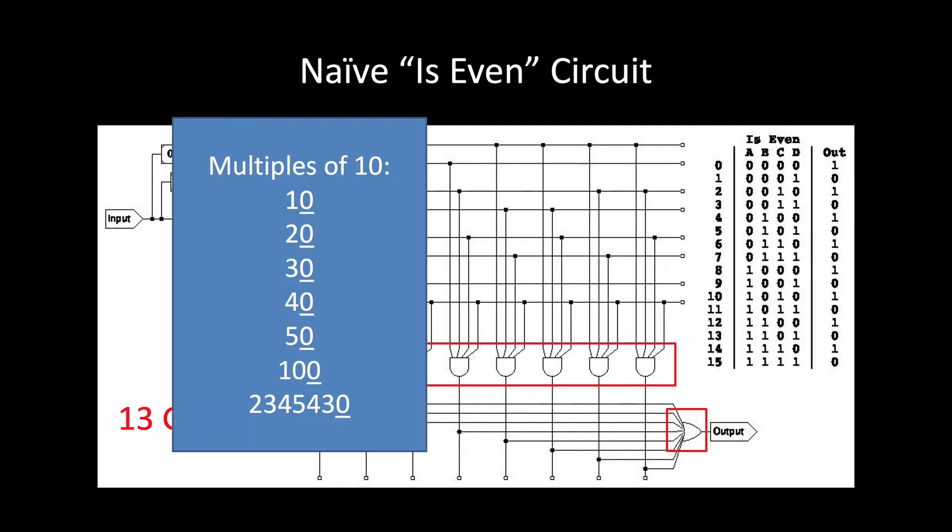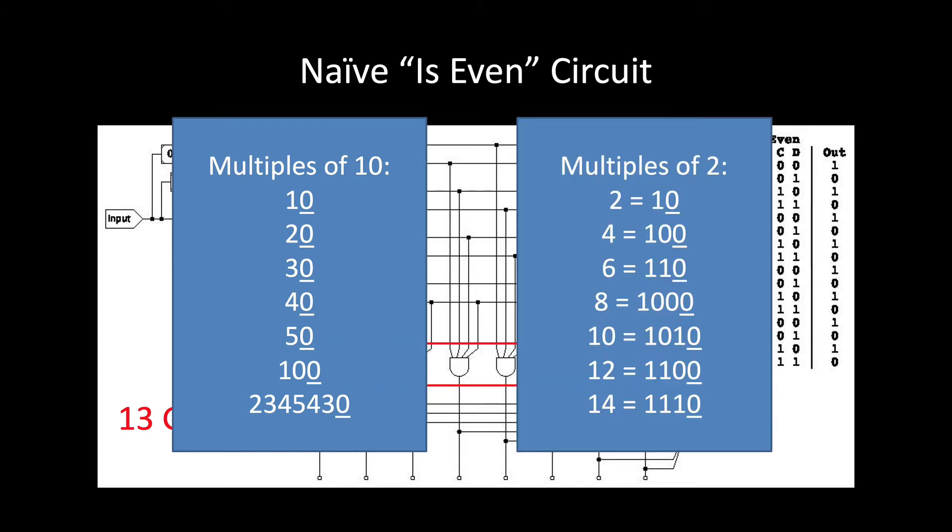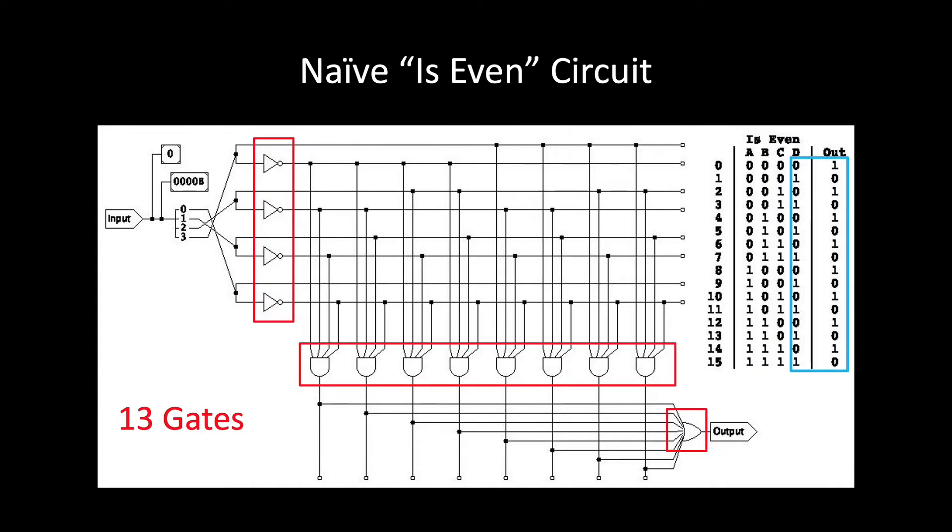Well, in decimal, multiples of 10 end with 0. So for an analogous reason, multiples of 2 in binary also end with a 0. So if you want to tell if a binary number is even, just look at its least significant bit. This bit, or the least significant wire, will have a 0 on it if and only if the number is even.